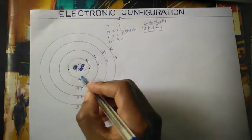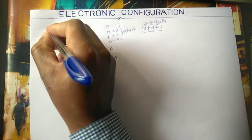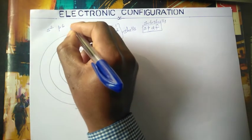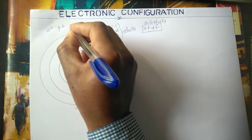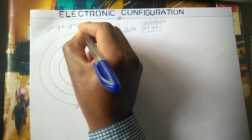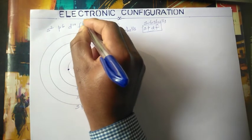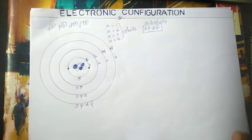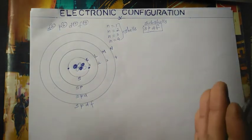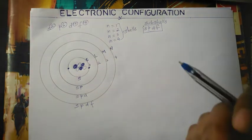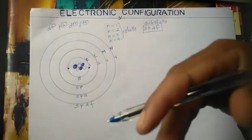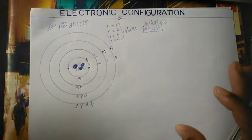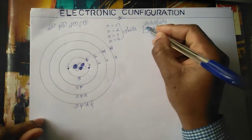Let me write this down in an easy way. S carries 2 electrons, p carries 6 electrons, d carries 10 electrons, and f carries 14 electrons. So: s=2, p=6, d=10, f=14. This is how we will work out the numbers for each energy level.